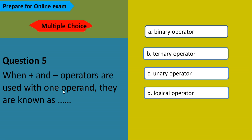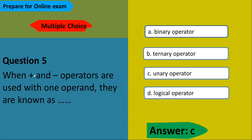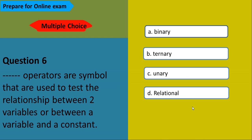When plus and minus operators are used with one operand, they are known as unary operators. When they are used with two operands, they are known as binary operators.